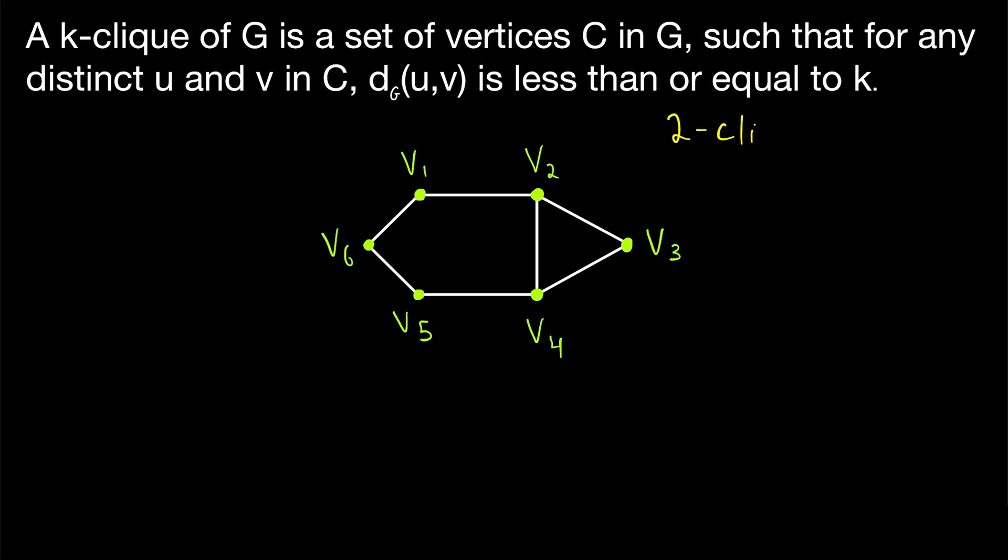For an example, let's look at a two-click of our graph on screen now. Suppose we begin with the vertex v6. Certainly, the distance between v6 and v1 is less than or equal to two, because the distance between them is one. Same thing for v6 and v5. However, v1 is not adjacent to v5. So we would not be able to include v6, v1 and v5 in a normal one-click. But we can include them in a two-click.